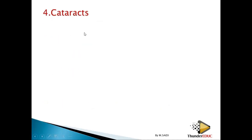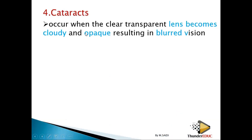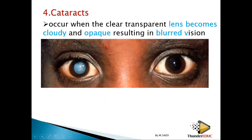The last defect is cataracts. Cataracts is a milky substance in the eye — it occurs when the clear, transparent lens becomes cloudy and opaque, meaning it does not allow light to pass through, resulting in blurred vision. This is how a normal eye looks versus a person with cataracts — the lens clouds over and becomes like milk, and solidifies.